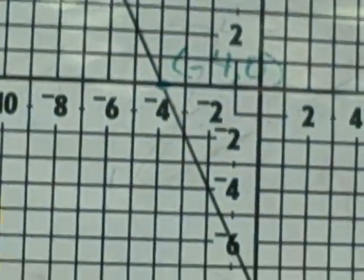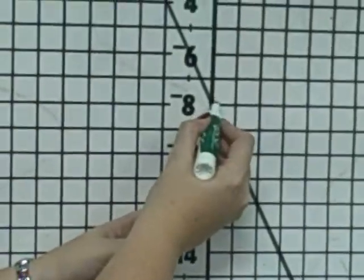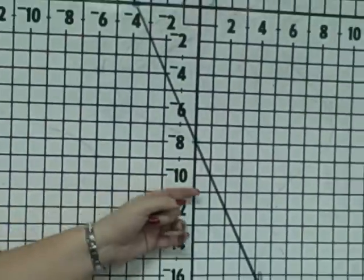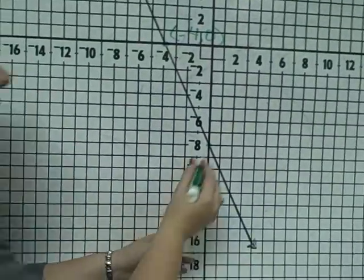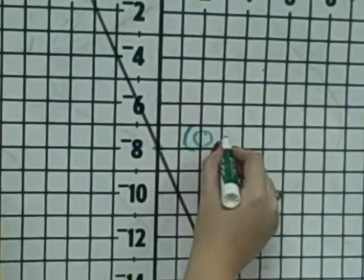The y-intercept is along the y-axis and is this point right here at negative 8. But again, it's a point on the graph and should be named with an ordered pair, 0 comma negative 8.